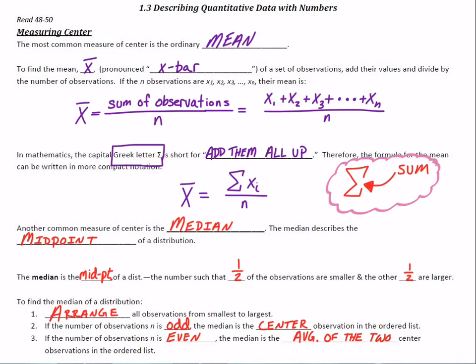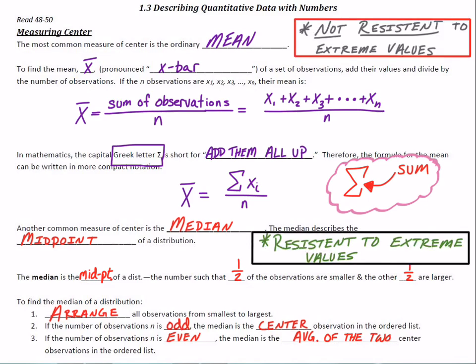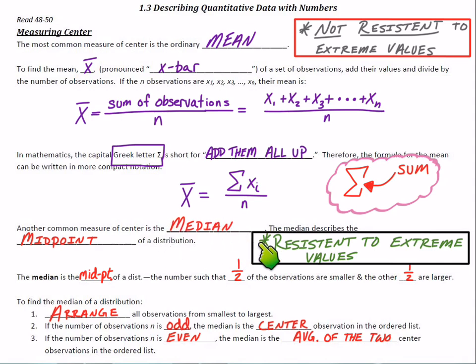We have two ways to measure center: the mean, where we take the average, and the median, where we find the middle observation. One of them is resistant to outliers — not heavily influenced by extreme values — whereas the other actually is influenced by outliers. The median is the resistant one; the mean is not. This is why when people find a measure of center for housing prices, they use the median, because the average price might be thrown off by some really expensive houses. The median only cares about the price of the middle house.